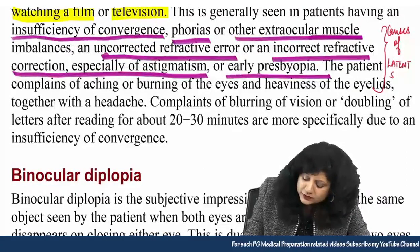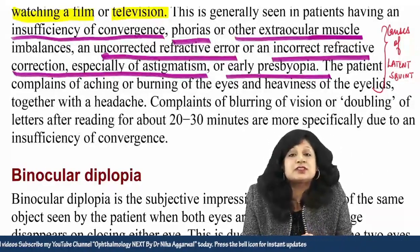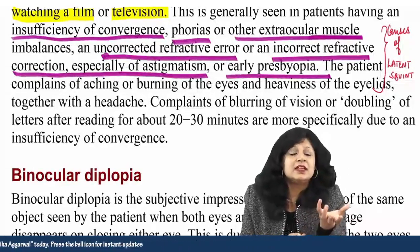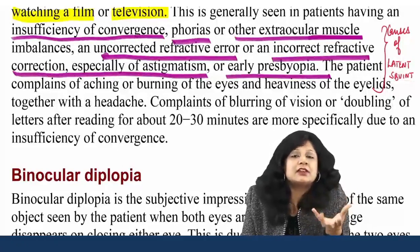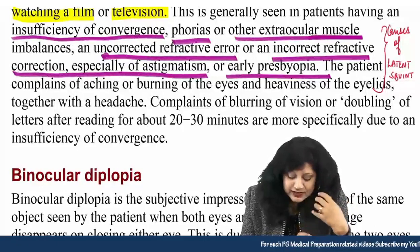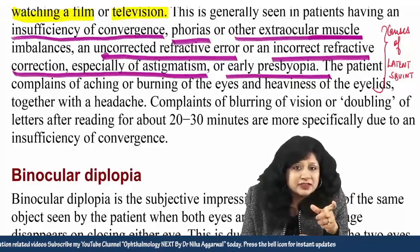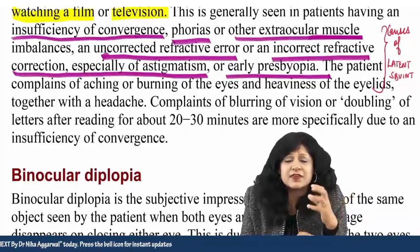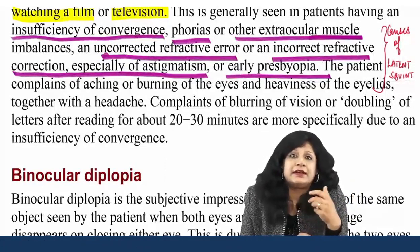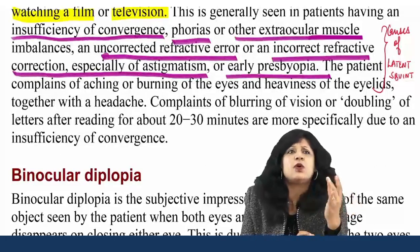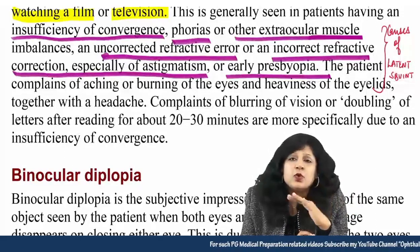In all those causes of the latent squint, we do not actually have squint, but something is there. When the fusional reserves fall short, the squint gets manifested. So we can have insufficiency of convergence, extraocular muscle imbalances, or uncorrected refractive errors. That is why the child is trying to accommodate more, especially in cases of uncorrected hypermetropia, over-usage of extraocular muscles, or faulty correction of astigmatism — all these things can lead to asthenopia.